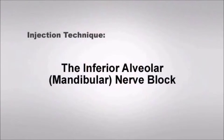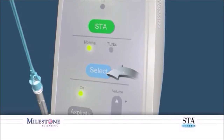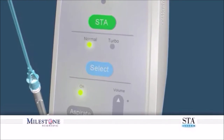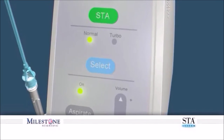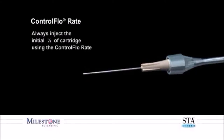Let's discuss how to begin. Injection technique: the inferior alveolar mandibular nerve block. Set the wand system to the normal mode, which allows the wand system to function with two distinct flow rates: the controlled flow rate and the rapid flow rate. Utilize the controlled flow rate to administer a minimum of one quarter of the cartridge for the initial phase of the block injection. Once the patient feels the onset of soft tissue anesthesia, transition to the rapid flow rate.